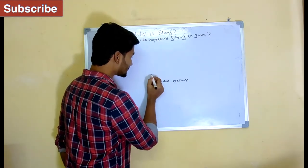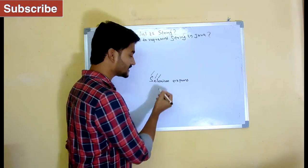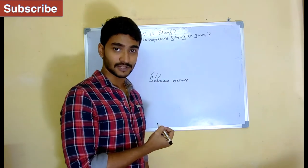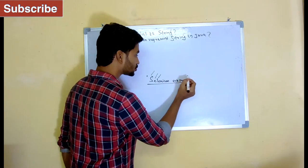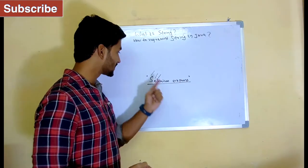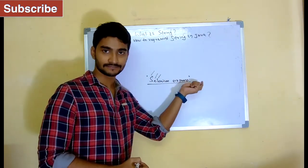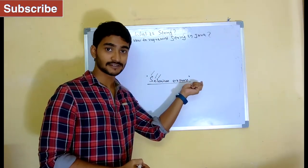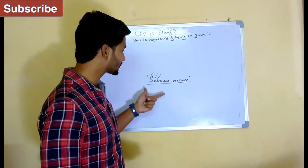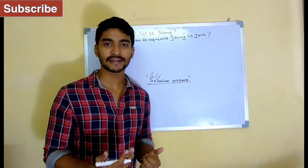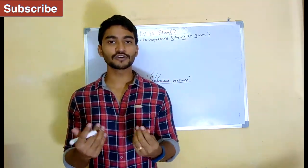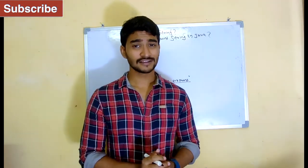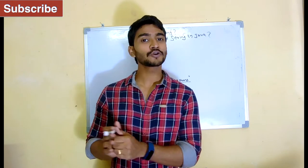If you see over here, this S is a character, E is a character, L is a character. The sequence of characters is called string in Java and it's represented with a double quote. So we can represent a sequence of characters or a group of characters by using string in Java.